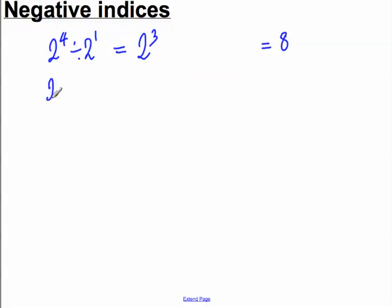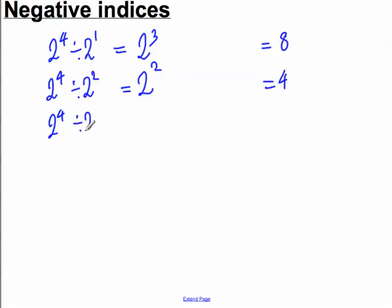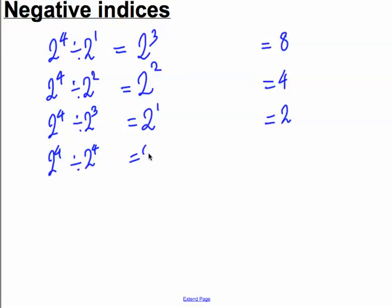Let's continue the pattern. 2 to the power of 4 divided by 2 to the power of 2 — that must be equal to 2 to the power of 4 subtract 2, which is 2, and the answer to that is 4. 2 to the power of 4 divided by 2 to the power of 3 must equal 2 to the power of 1, which is simply 2. 2 to the power of 4 divided by 2 to the power of 4 must equal 2 to the power of 0, and we've shown in a previous video that this is equal to 1.